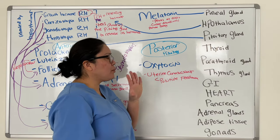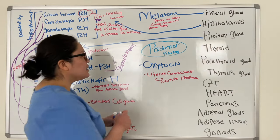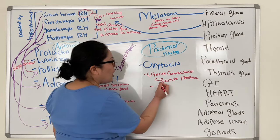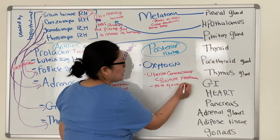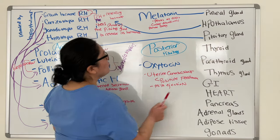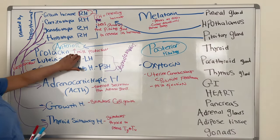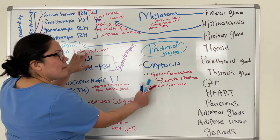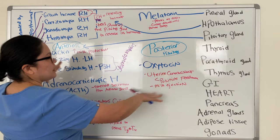Oxytocin — the first thing you think of is uterine contractions. The second thing is milk ejection from the breast. Don't get oxytocin confused with prolactin — prolactin makes the milk, but oxytocin makes that milk come out. They have two different jobs but both deal with milk.